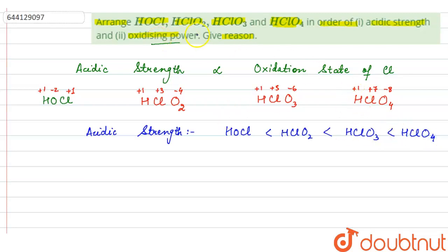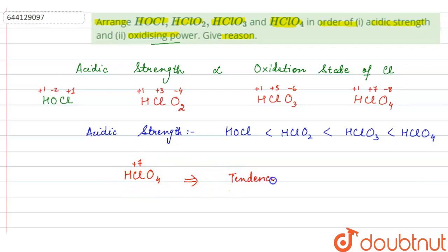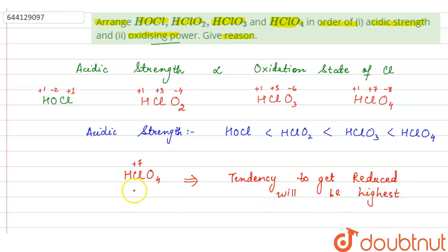If we talk about oxidizing power, the order of oxidizing power remains the same. In HClO₄, chlorine is present in its highest oxidation state of +7, which is the highest state of chlorine, so it cannot be further oxidized — but it can be reduced. Its tendency to get reduced will be highest. Since its tendency to get reduced is highest, its oxidizing power will be highest, because its tendency to oxidize other compounds will be highest.